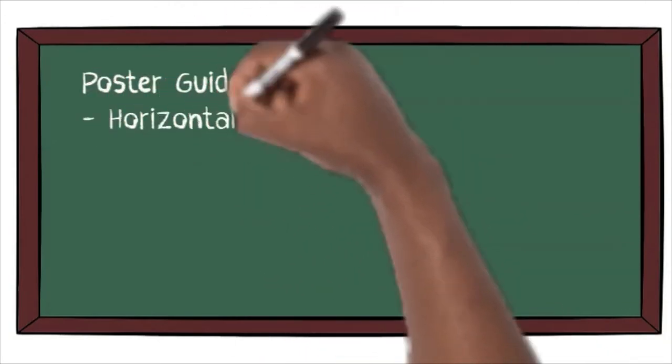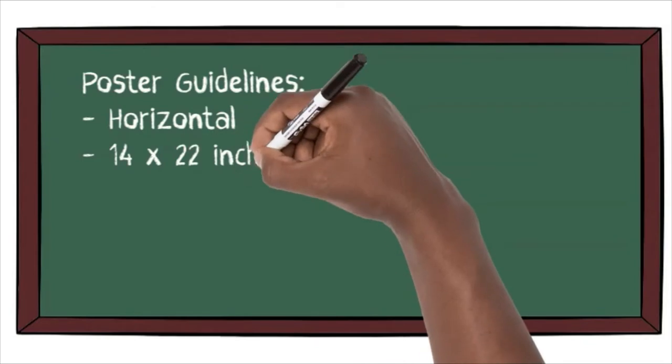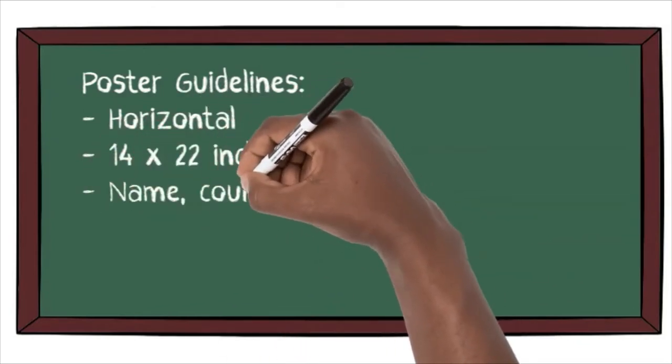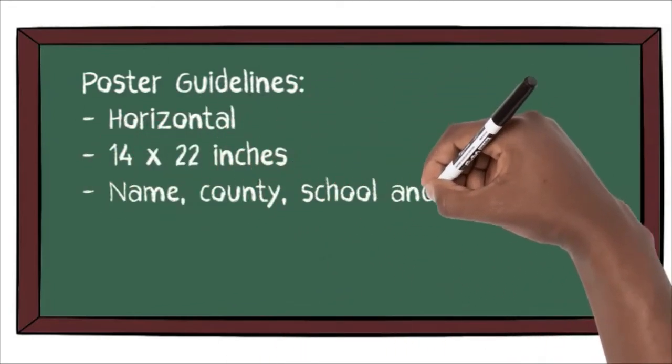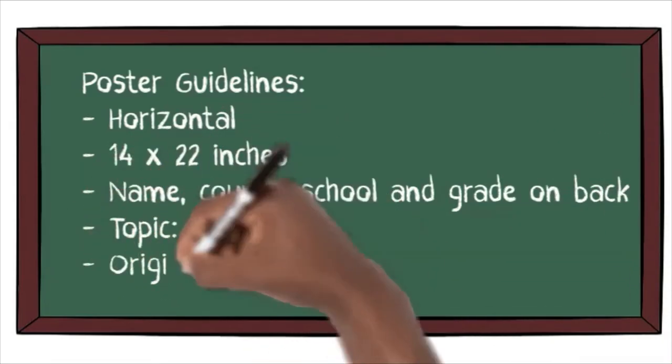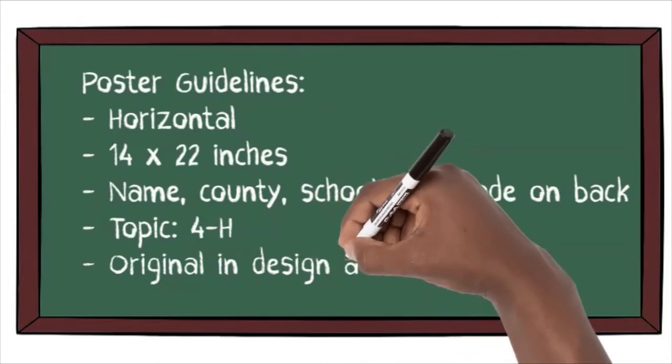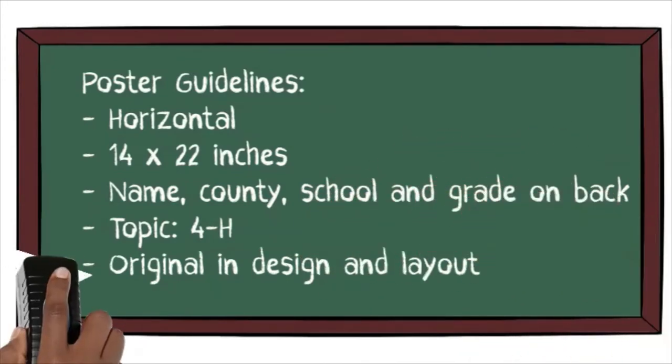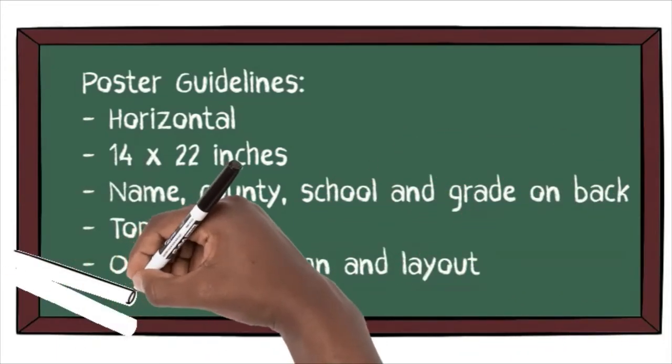The size of the 4-H poster is 14 by 22 inches, which is half a sheet of poster board. On the back of the poster, be sure to include your name, your county, your school, and your grade. Of course, the topic of your 4-H poster should be 4-H.